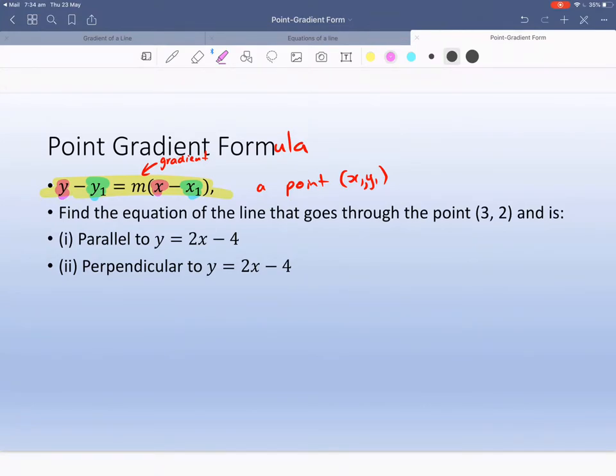Here's a really good telltale sign that we need to use point gradient form. It says find the equation of the line. 9 out of 10 times, maybe 99 out of 100 times, it means that we need to use this formula. So we need a point and we've got a point here and we need a gradient.